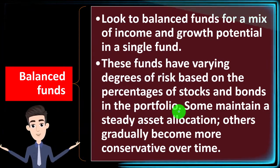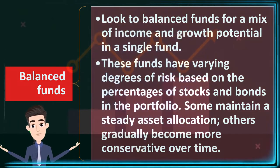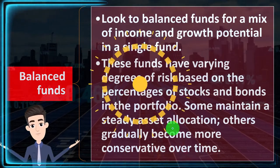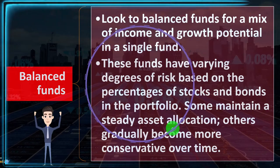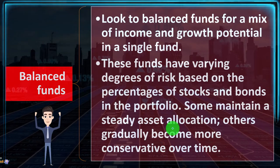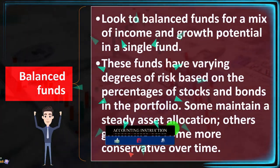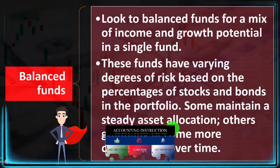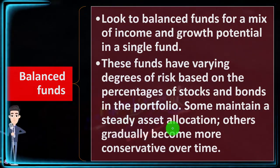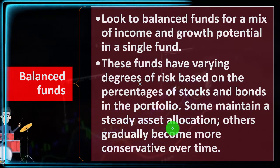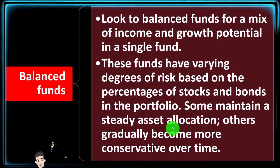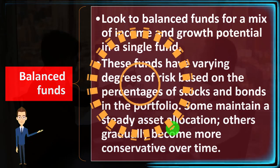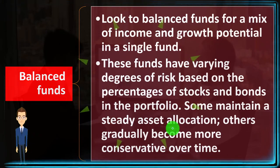Some balanced funds maintain a steady asset allocation while others gradually become more conservative over time. You might select a fund that allocates between bonds and stocks at a fixed ratio, or — especially for retirement-oriented funds under an IRA or 401k — a fund targeted to your retirement age. As your time horizon gets shorter, the general approach is to reallocate toward more income-generating, stable, lower-risk investments. When you're further from the target, you might take on more risk in exchange for growth over a long period.